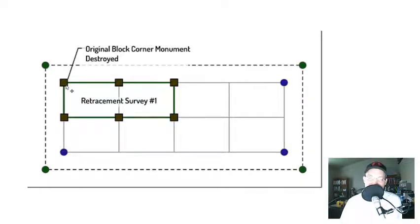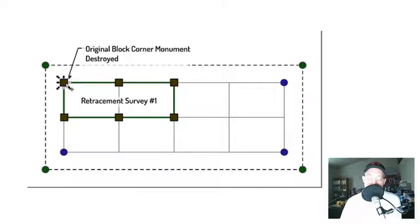Now let's talk about this monument in the corner because it's a little different. It is also a retracement monument, but it's a retracement monument that purports to replace an original controlling monument. This corner was actually monumented on the original survey, but it's no longer an original monument because it's been replaced — the original monument was destroyed and he reset it. So this is now a retracement monument that replaced an original monument, and it is also not without error in the eyes of the law. If this surveyor made a mistake on retracement survey one and reset this out of position, this monument isn't going to control — the original corner is going to control, just like over here.